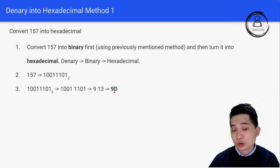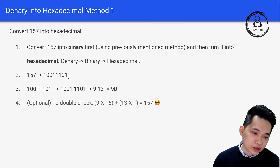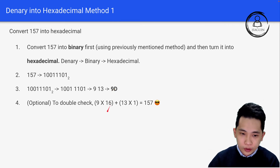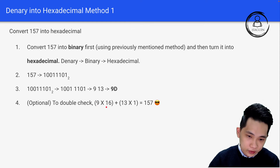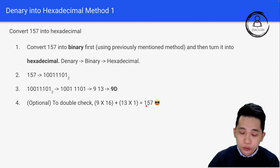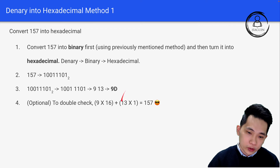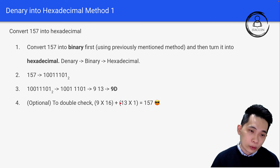This is Method 1. Step 4 — verification — is optional. To double-check: 9 times 16 plus 13 times 1 equals 157. If you're confident in your working you can skip this step, but it's good practice to double check.